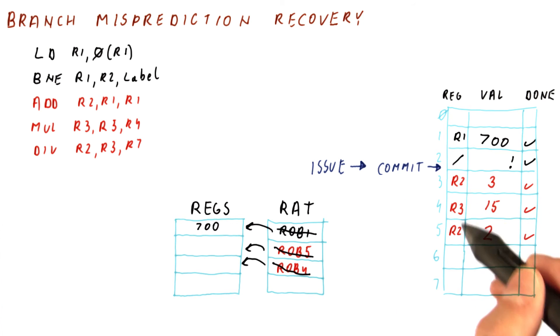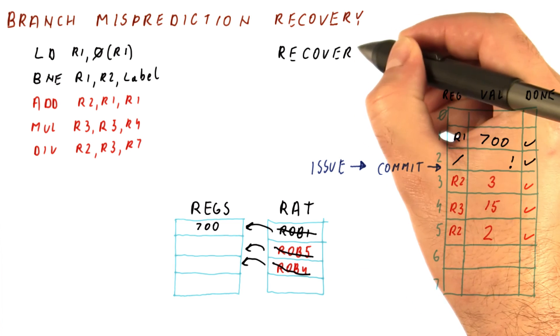So as you can see here, we have executed these instructions before we figured out the branch, but we are still able to undo this damage.